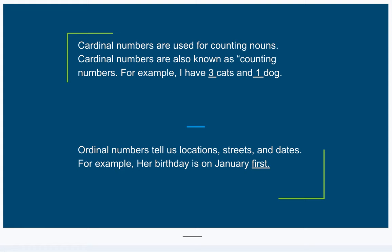First, cardinal numbers are used for counting nouns. Cardinal numbers are also known as counting numbers. For example, I have three cats and one dog.